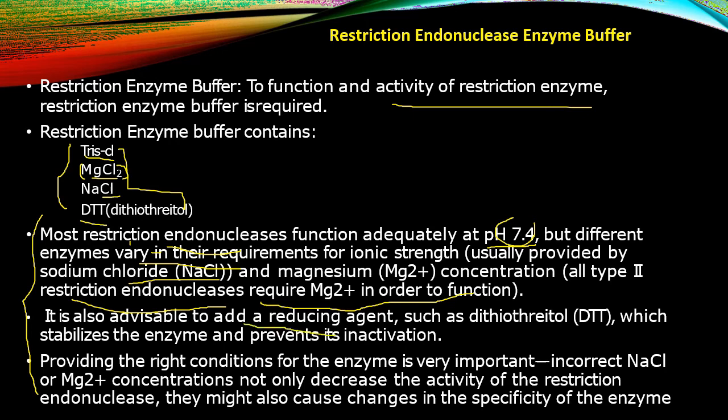It is also advisable to add a reducing agent, which is DTT — dithiothreitol — which stabilizes the enzyme and prevents its inactivation. Reducing agents such as DTT are essential in the restriction enzyme buffer for stabilizing the enzyme and preventing its inactivation.